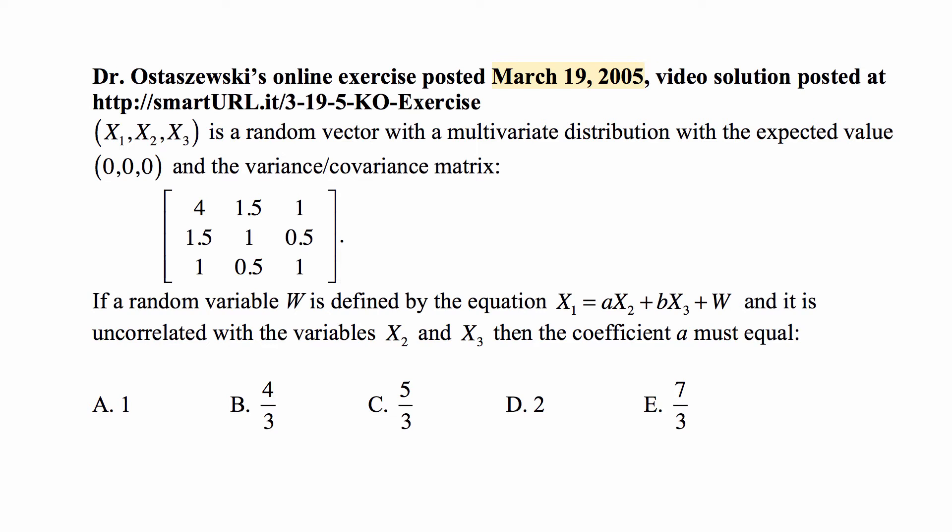And what this matrix says is that the covariance of X1 with itself, so the entry in row 1, column 1, is 4, which is the variance of X1. Covariance of X1 with X1 is variance of X1, that's equal to 4. Covariance of X1 and X2, that's first row, second column, is 1.5. Covariance of X1 and X3, that's first row, third column, is 1.